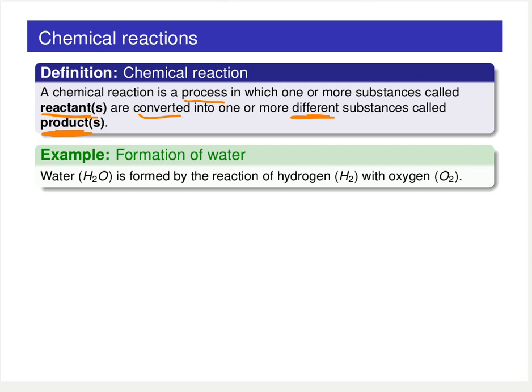So we have a change, a chemical transformation changing reactants into products. For example, if we are forming water, you can form water H2O by reacting hydrogen H2 and oxygen O2. So we've defined here in this example a simple chemical reaction.